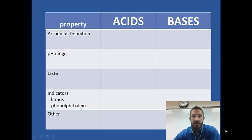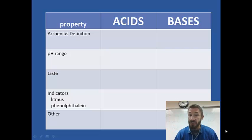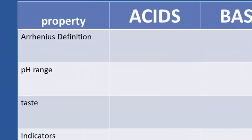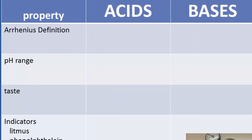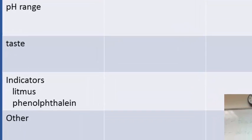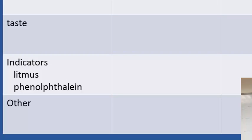So let's start with some definitions of acids and bases. The most simple definition is what we call the Arrhenius definition, named after a scientist who came up with the idea of acids and bases. Next is the pH range, what taste acids and bases have, and indicators — things that turn colors just like the hydrangea. Two indicators we're going to look at in the lab are litmus and phenolphthalein.